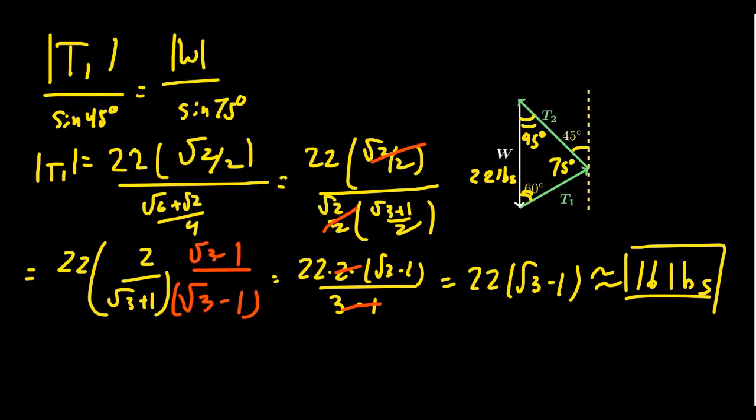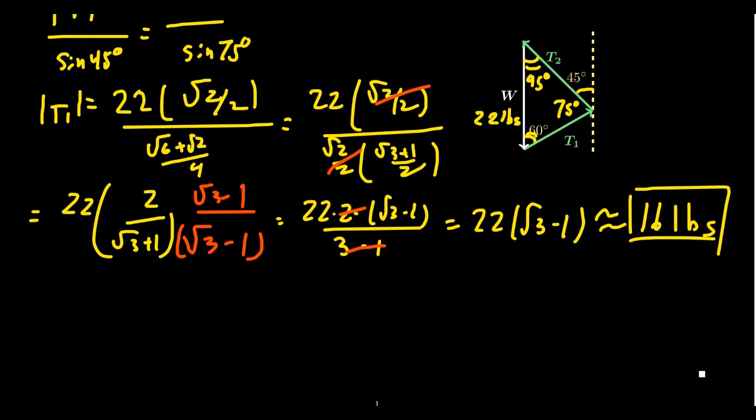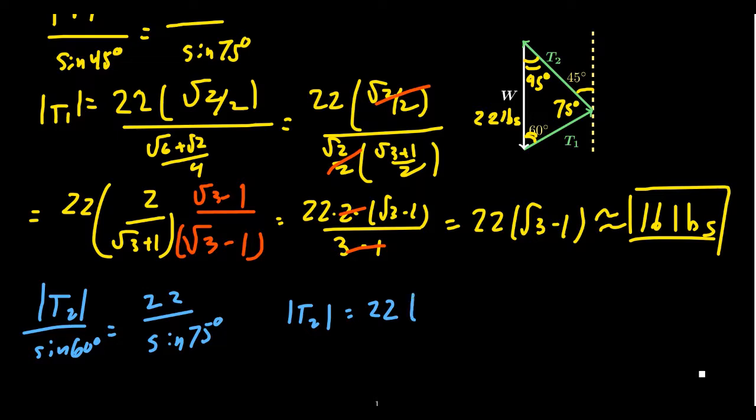Well, to find the tension along the second wire, T2, we're just going to do another law of sines situation. We're going to use this AOS this time. So we have that the tension along T2 over sine of 60 degrees. This is going to equal 22 over sine of 75 degrees. Clearing the denominators, or that's to say times both sides by sine of 60, we end up with 22 times sine of 60. Sine of 60 is root 3 over 2. And then the denominator, we have another root 2 over 2 times the square root of 3 plus 1 over 2. Well, let's try to simplify this thing a little bit.